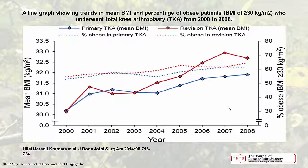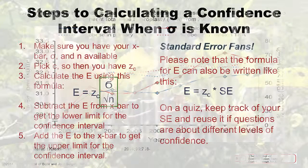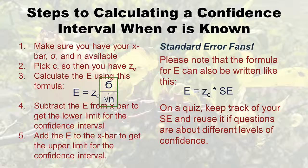For standard error fans: you might notice that the standard error is hiding inside the margin of error formula. You can pre-calculate your standard error and reuse it. If questions ask about different levels of confidence, only your Z sub C changes — the standard error stays the same. So keep track of your SE on a quiz and reuse it.